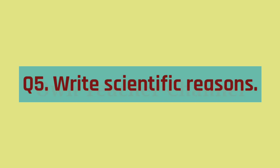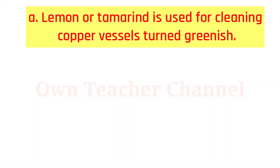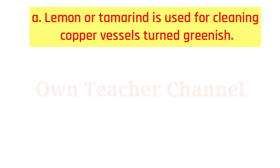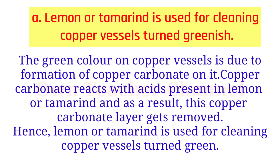Question 5: Write scientific reasons. Lemon or tamarind is used for cleaning copper vessels turned greenish. The green color on copper vessels is due to the formation of copper carbonate on it. Copper carbonate reacts with the acids present in lemon or tamarind, and as a result, this copper carbonate layer gets removed. Hence, lemon or tamarind is used for cleaning copper vessels turned green.